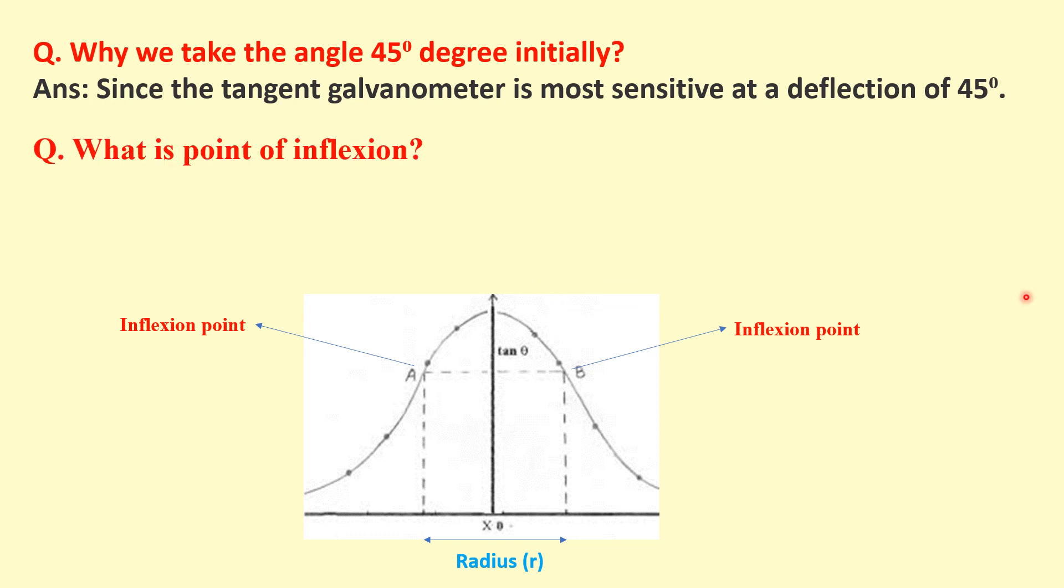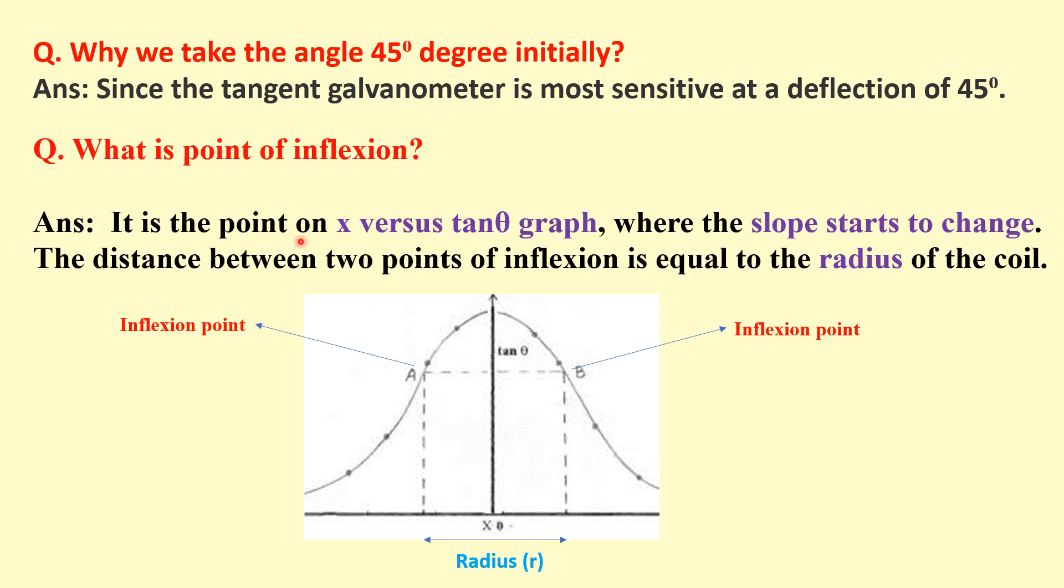What is point of inflection? If we plot the distance x versus tan theta graph, then at some point the slope starts to change. Here this point near to a and b, these points are known as the inflection points. And the distance between these two points is equal to the radius of the coil. So from this graph also we can find out the radius of coil.